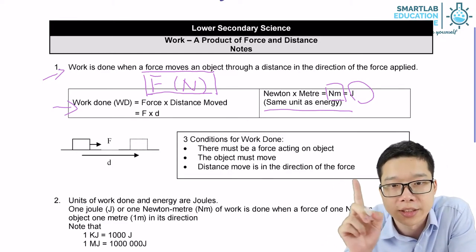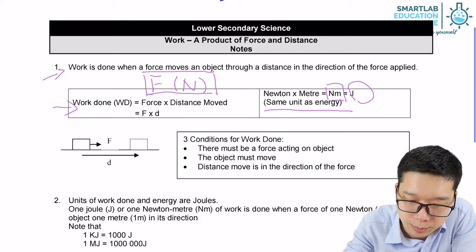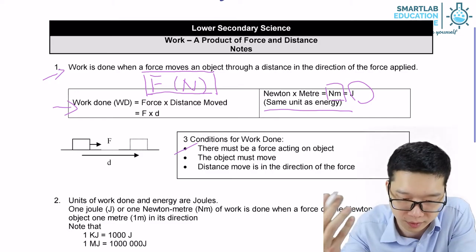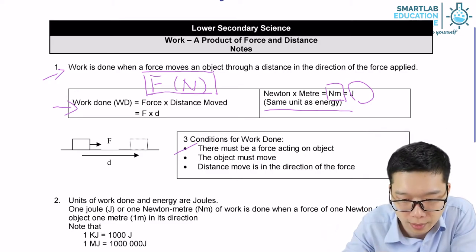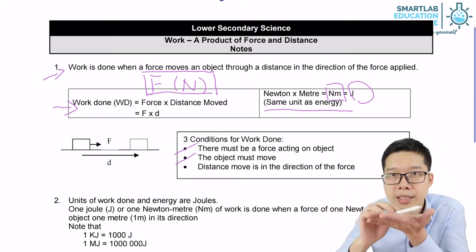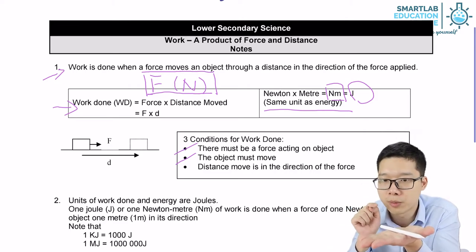So there are three conditions to have work done. Number one, there must be a force on the object. Of course, because force times distance. Number two, the object must move. If I keep giving force on the pen, but the pen never moves, I'm just holding onto the pen and I'm not doing any work.